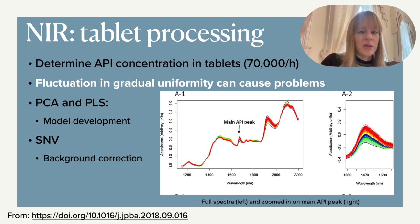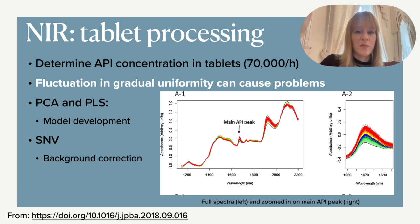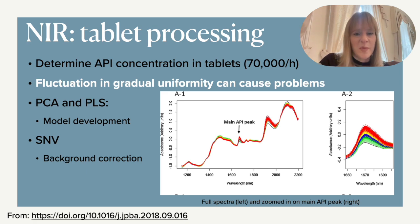If you look at the spectrum you will see a whole range of different peaks. There can also be some drift in the signal, so normally you'd expect a nice straight line. The first thing you want to do is apply some background correction — something like SNV, a method for background correction — to make sure you don't see the influence of that baseline shift. This is likely due to the fact that within your tablet there are many other compounds besides the active pharmaceutical ingredient, such as a coating which might be titanium, and excipients, all of which can give a peak.